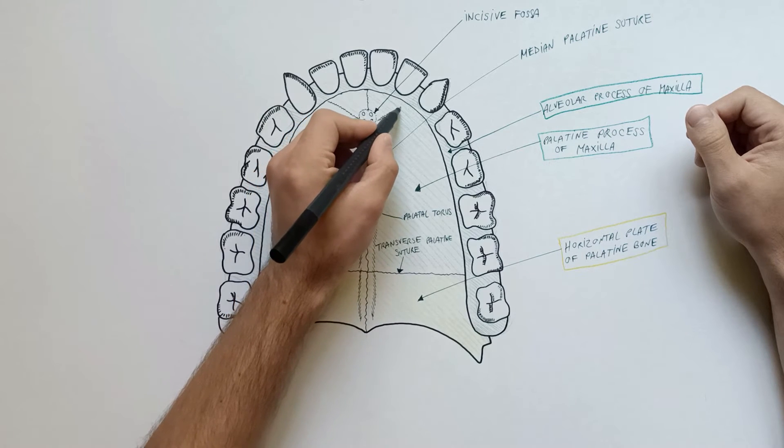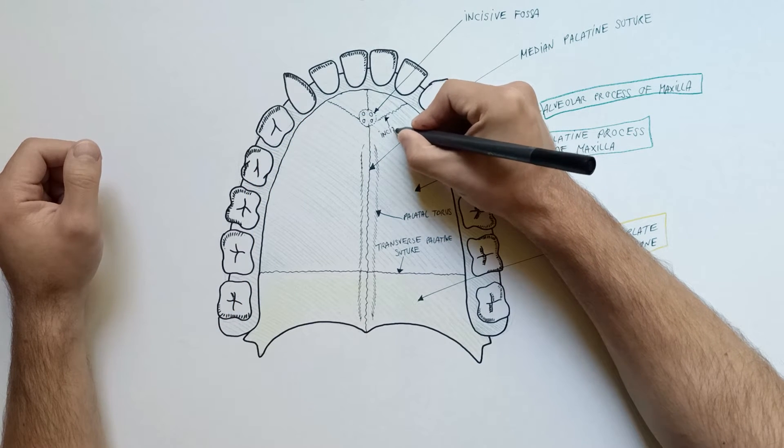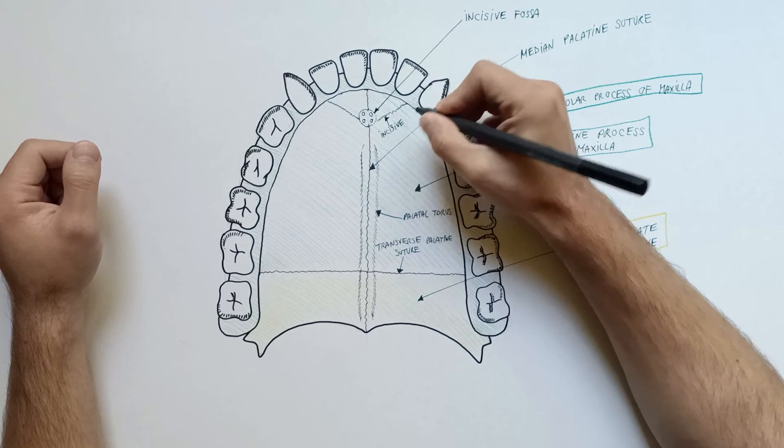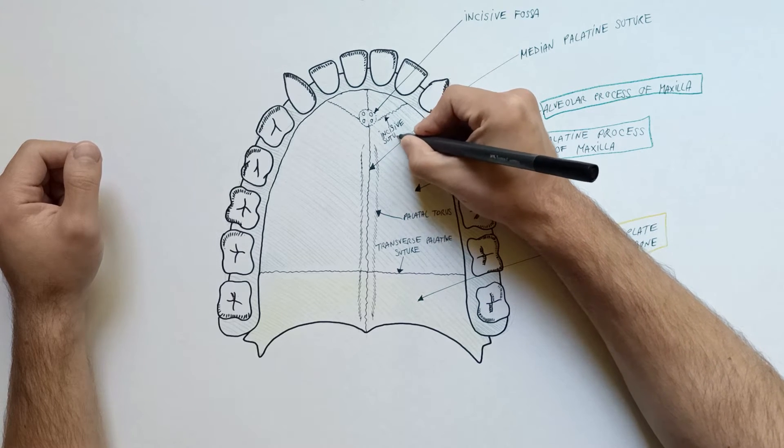Sometimes the incisive suture is present between the incisive fossa and the interspace between the second incisor and canine teeth.